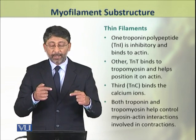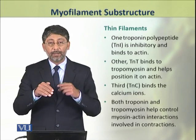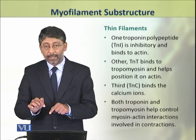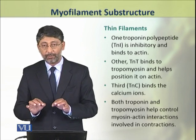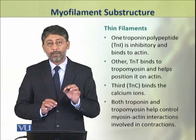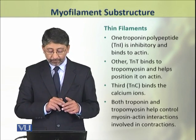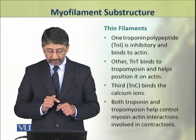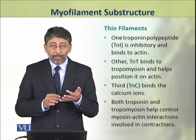Tropomyosin is twisted around the Actin. TNT helps position Tropomyosin on the Actin filament. The third polypeptide, TNC, binds with the calcium ions.